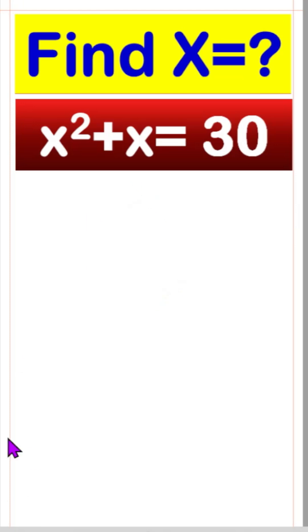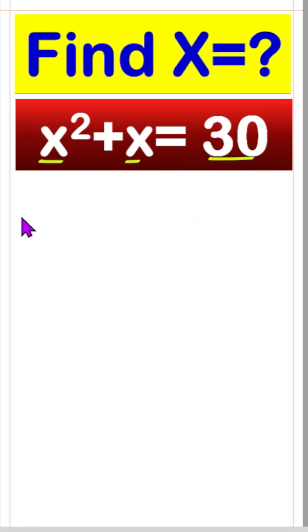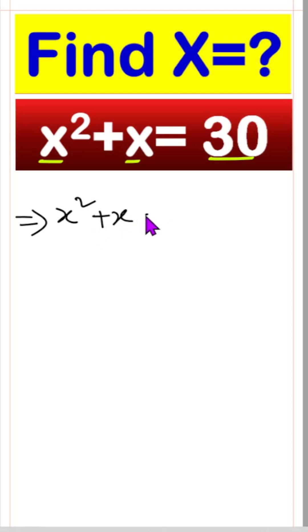Find x. x squared plus x equals 30. We have to find out the value of x. First, we can write x squared plus x minus 30 equals 0.